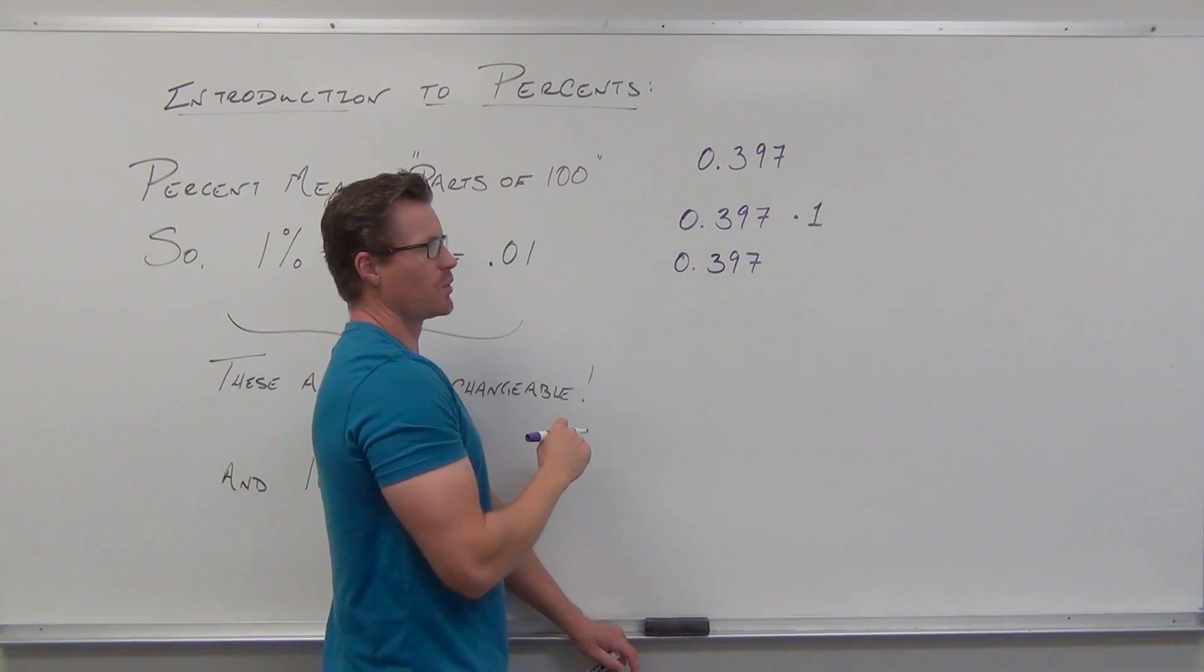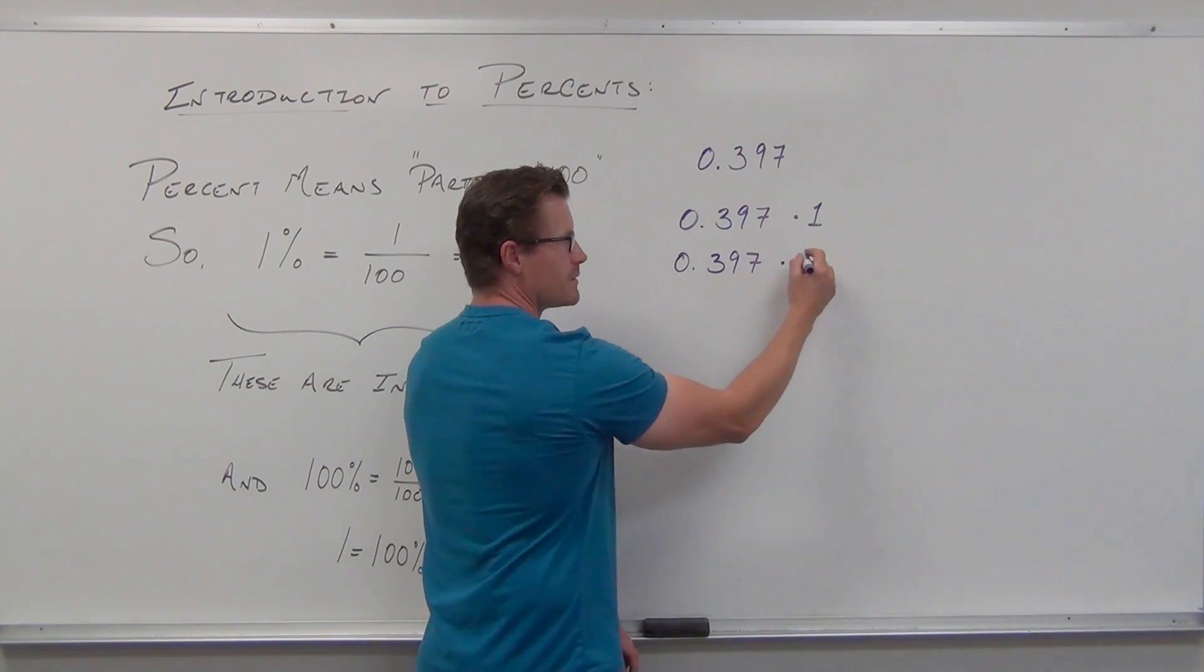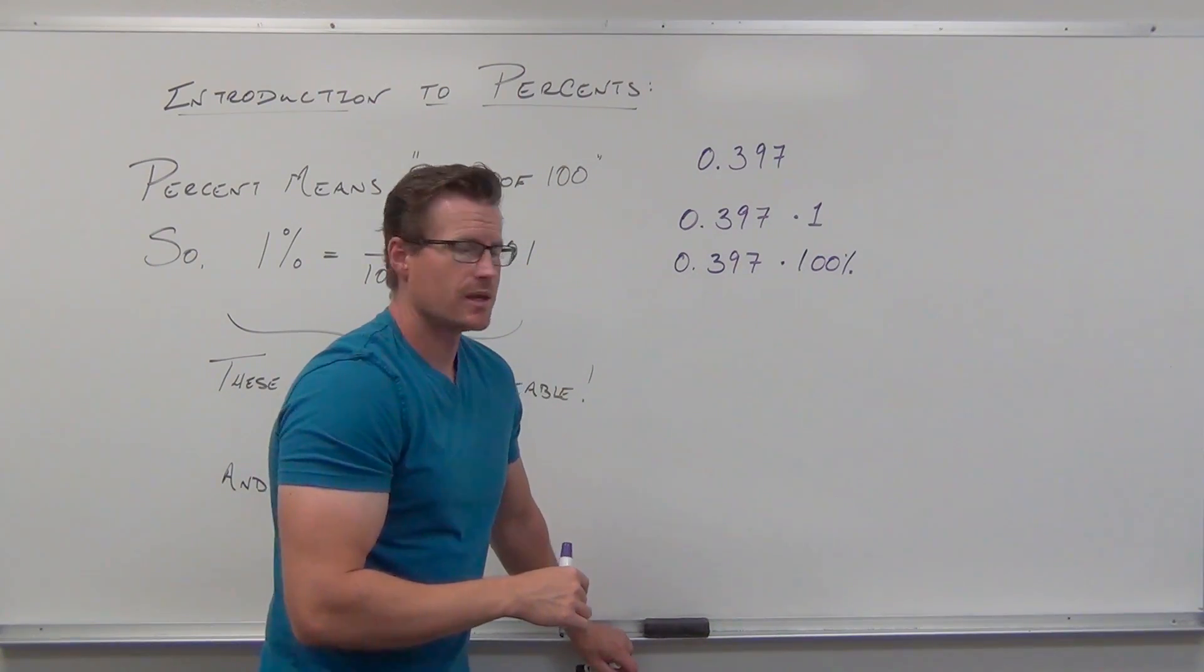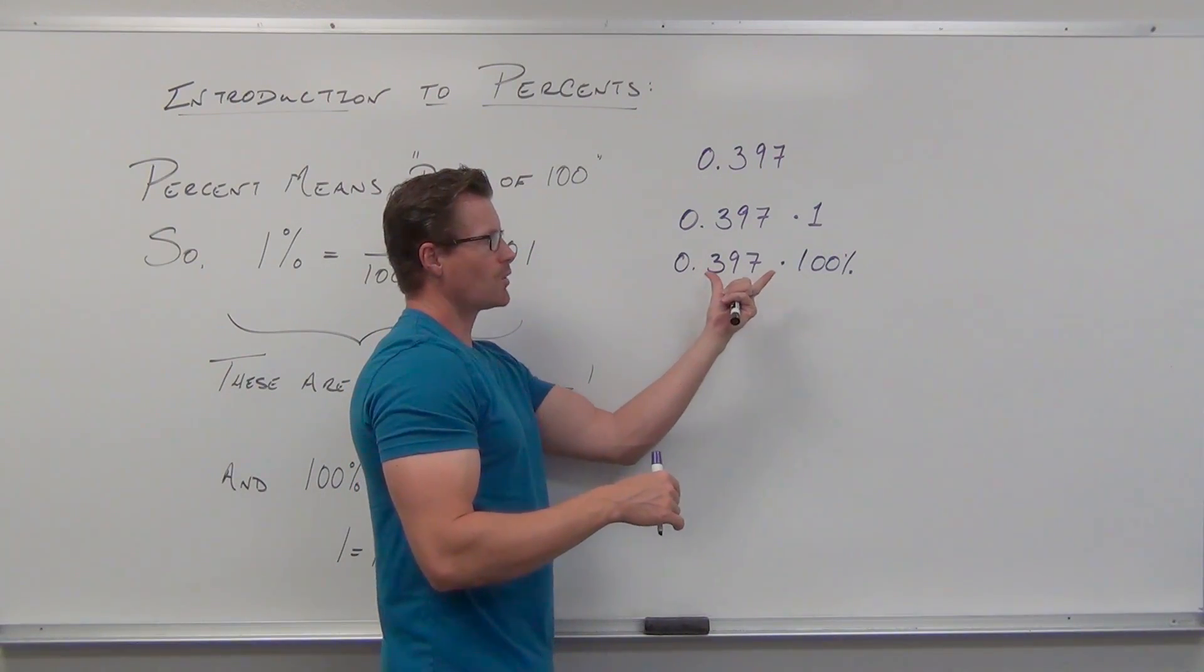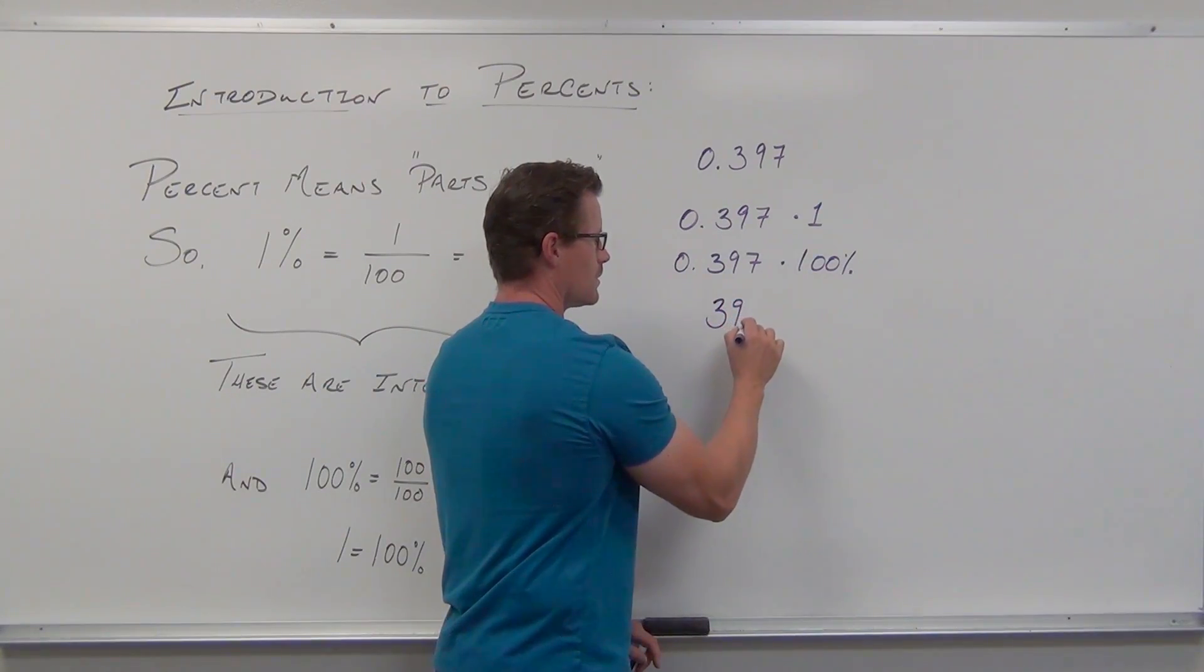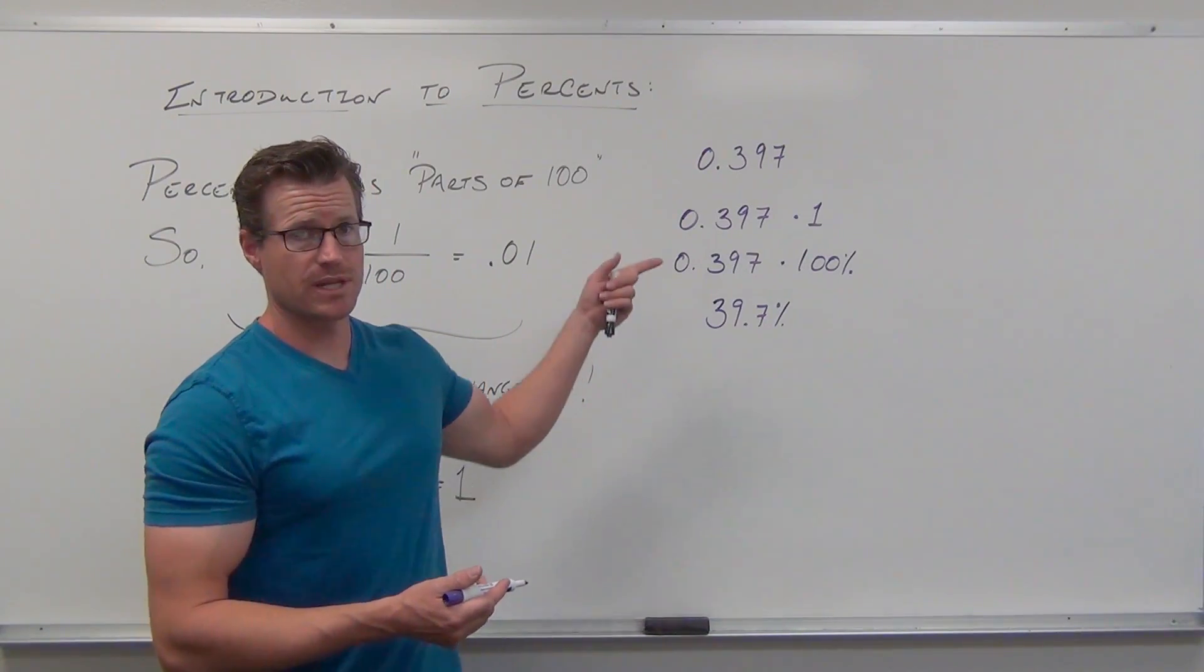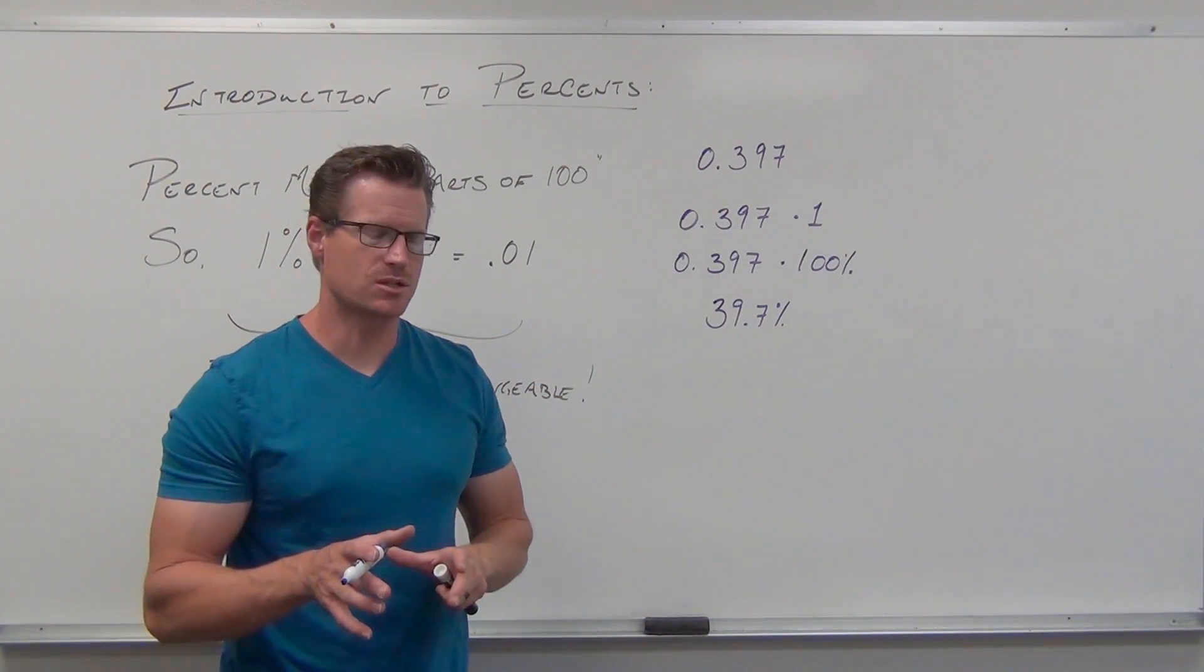If .397 times one, and one equals 100%, one's the same thing as 100%, they're equivalent. Then, what that tells us to do, is if we just take our calculators out, or use your head, whatever you want to do. Multiply .397 times 100, and that adds the percent into our expression. This is the percent representation. Yeah, could you just move the decimal two spots right? Of course you can. But this is the reason why that works. I hope that makes sense to you.